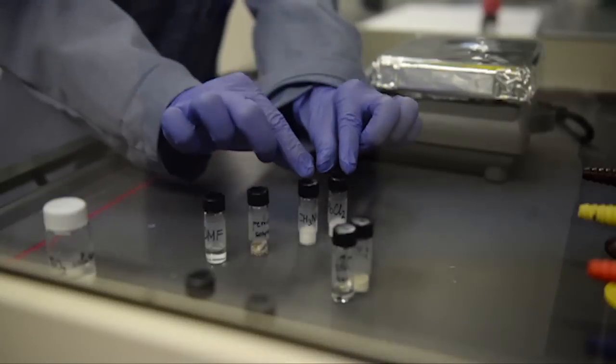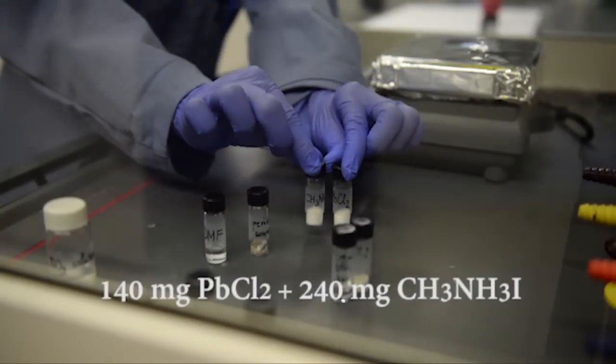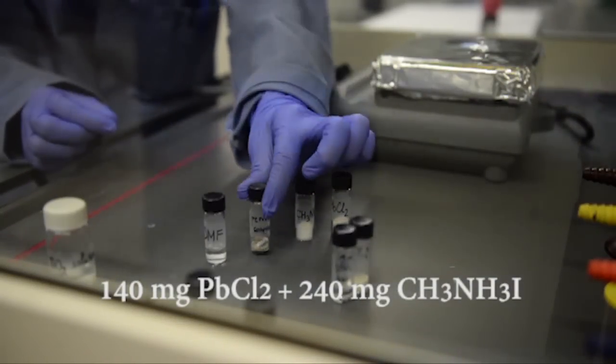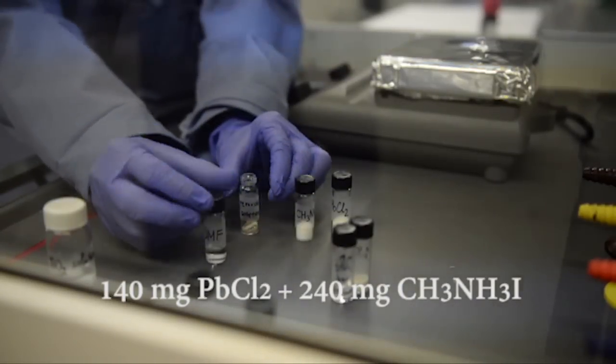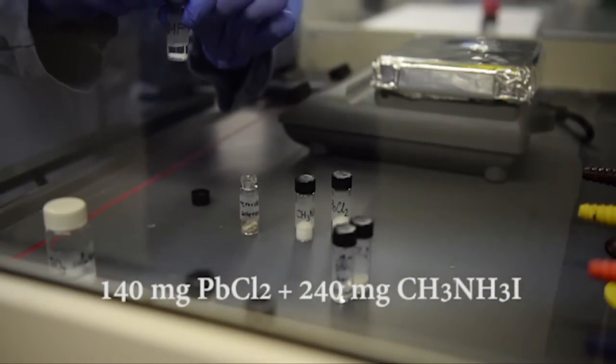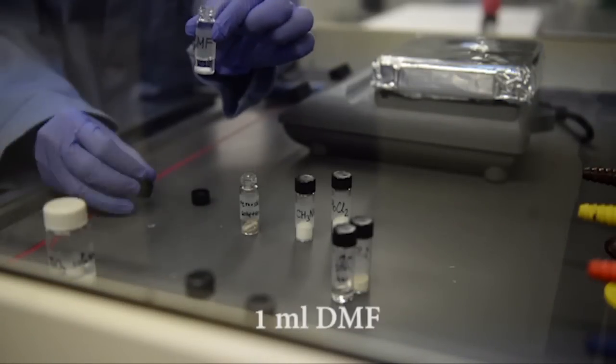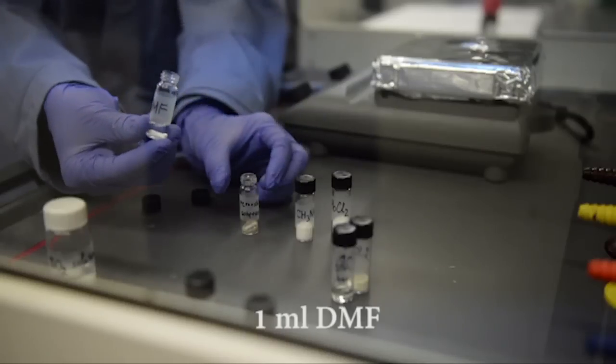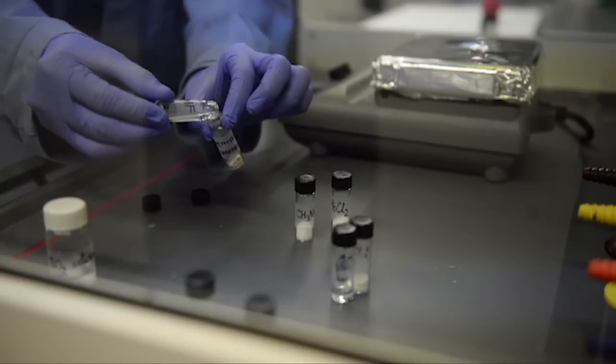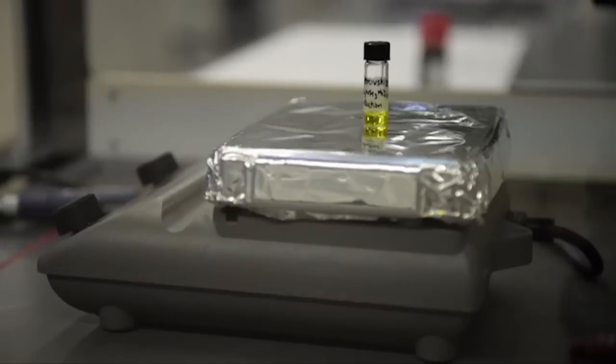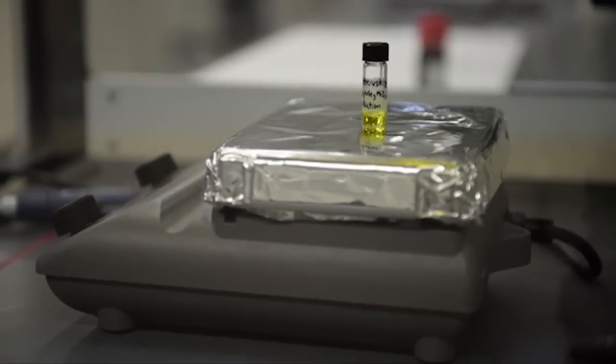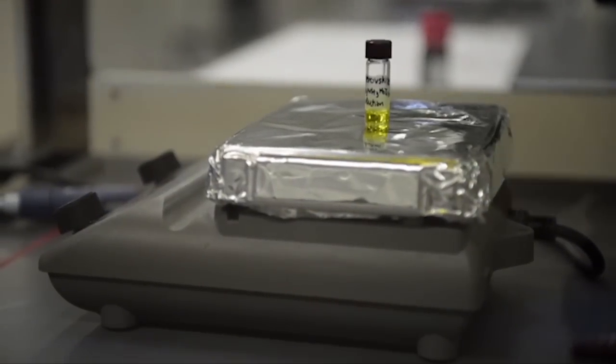The second solution we have to prepare is the light-absorbing material perovskite. To make a 0.5 molar perovskite solution, we will need to mix 140 milligrams of lead chloride and 240 milligrams of methylammonium iodide in one milliliter of dimethylformamide solvent. The resulting mixture is to be stirred at 80 degrees Celsius until a homogeneous yellow and transparent solution is formed.